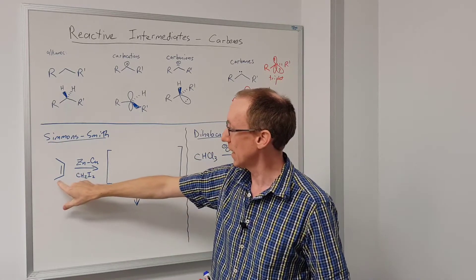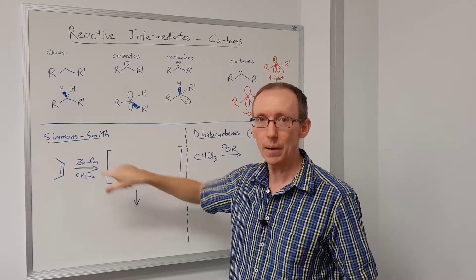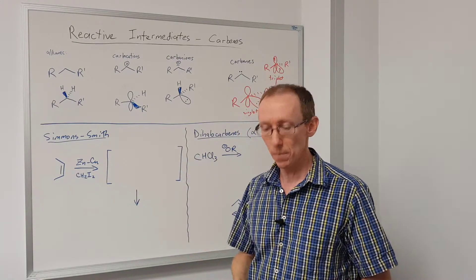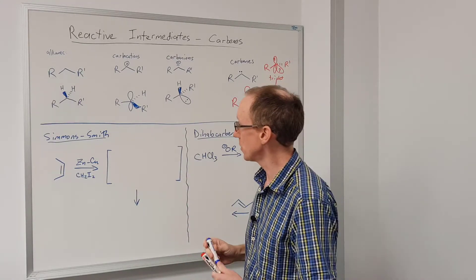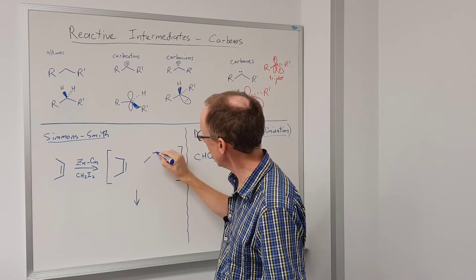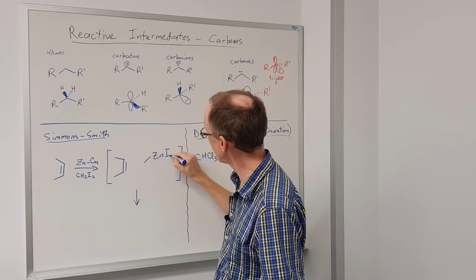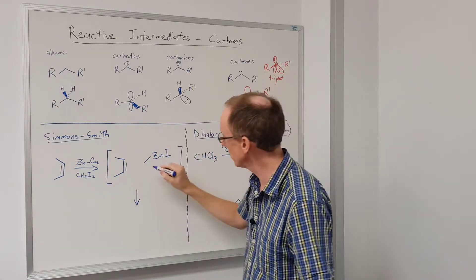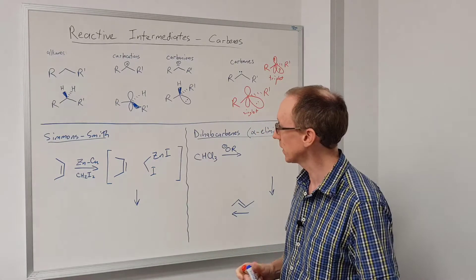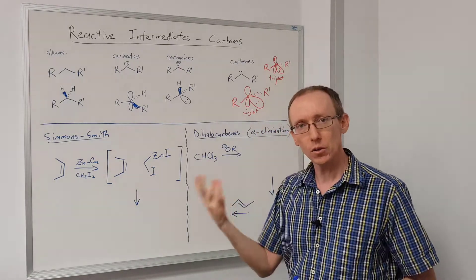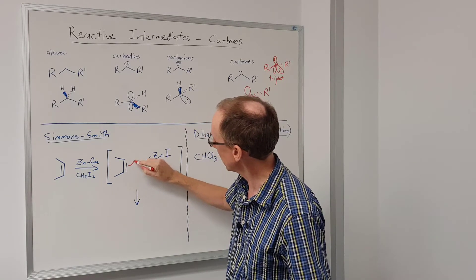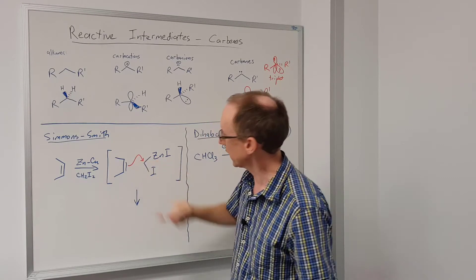One reaction that has a carbenoid type of intermediate is the Simmons-Smith reaction. This is where we take an alkene and we react it with zinc-copper couple - a mixture of zinc and copper - and diiodomethane. Under those conditions we get the alkene and we generate a species that has a zinc inserted into one of those carbon-iodine bonds. So we have this species - it's an organometallic - and it acts as both a nucleophile and an electrophile.